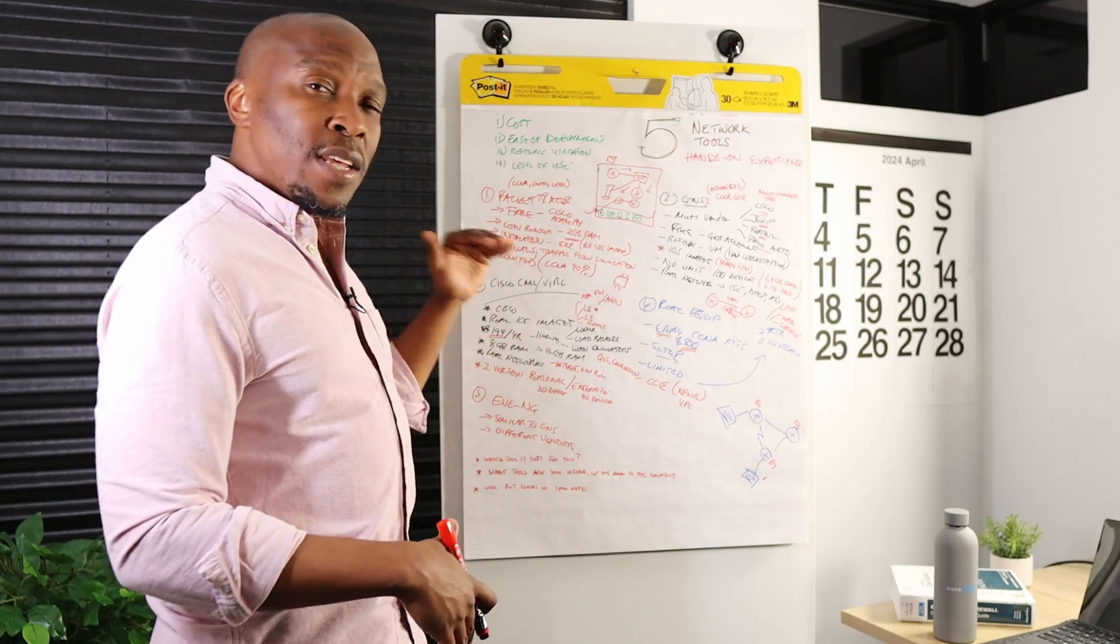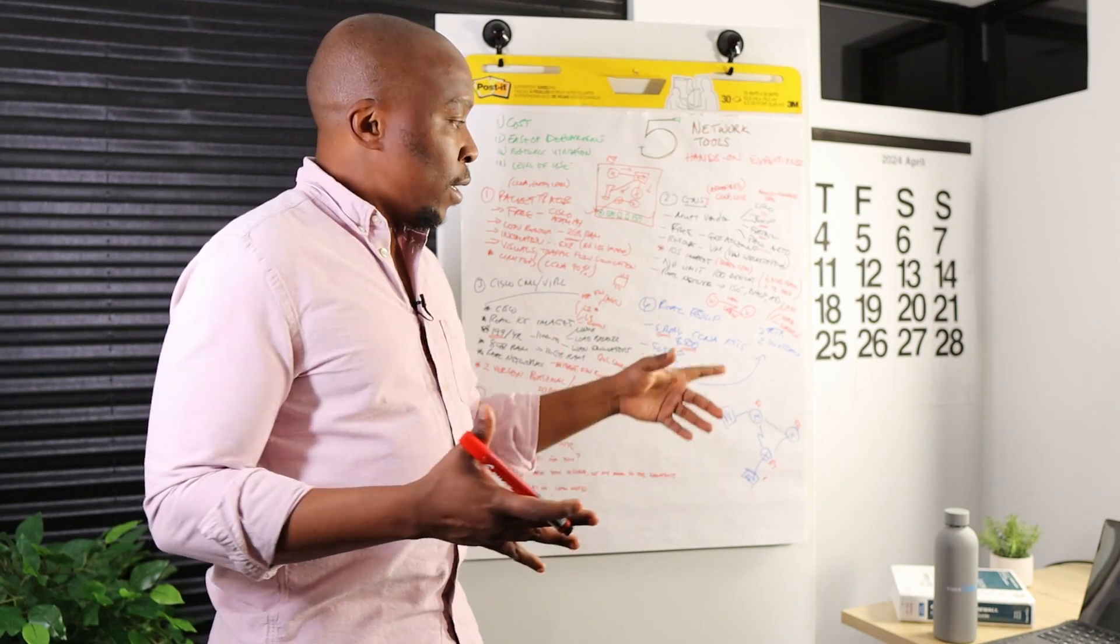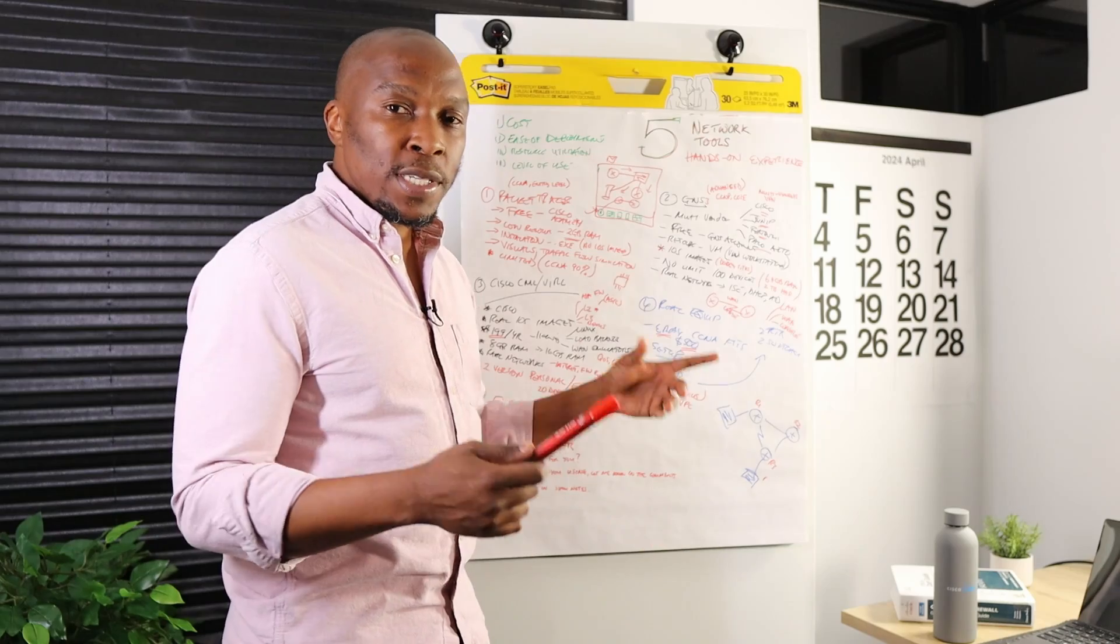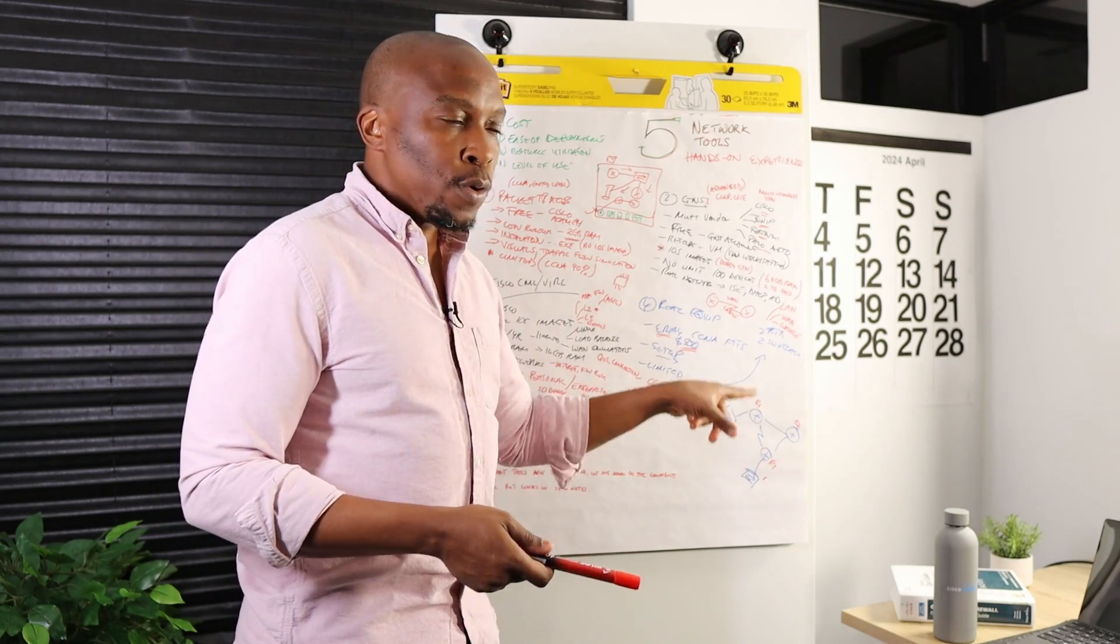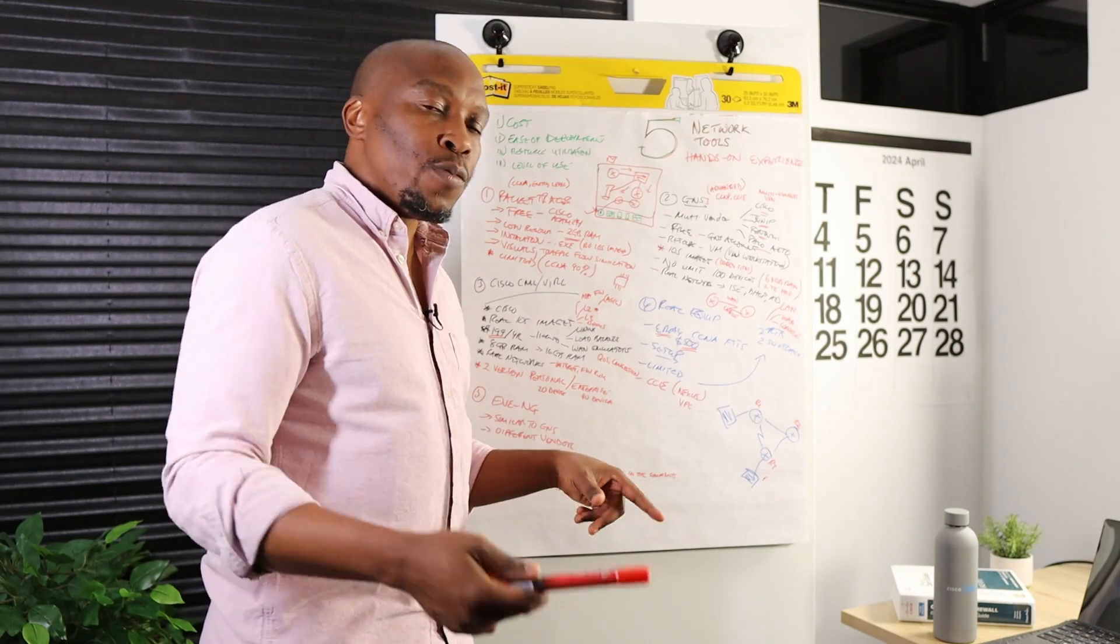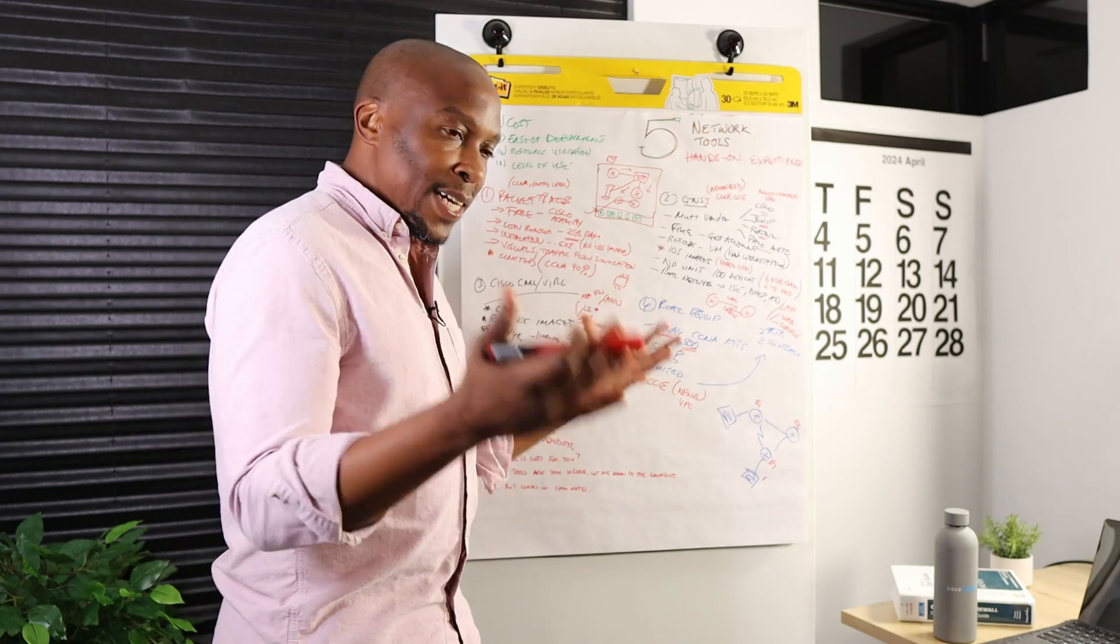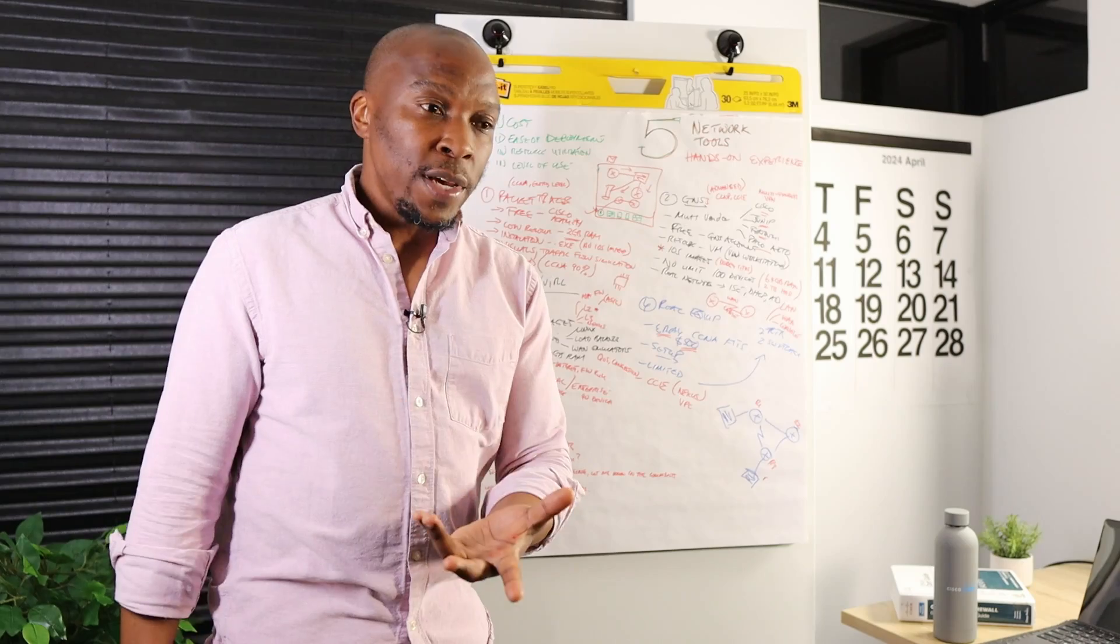The second one is that you've got limitations in the size of the lab that you can build. If you're going to have two switches and two routers, it means that the best you can do is a two router and two switch lab. The moment you need three routers, you're going to need another additional device which you don't have. So be mindful that the size of your lab is going to be dependent on the number of physical devices that you have.